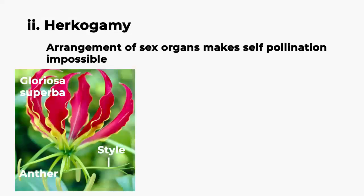Example: Gloriosa superba. In this flower, the style is reflexed away from the stamens, which physically prevents self-pollination.